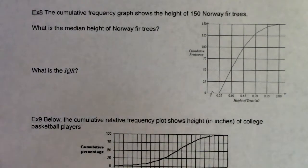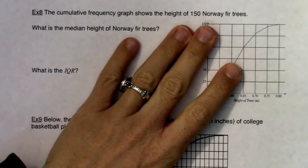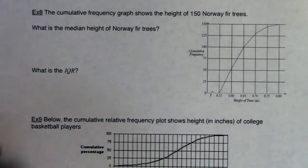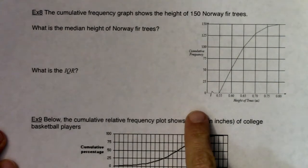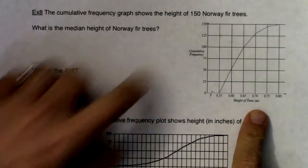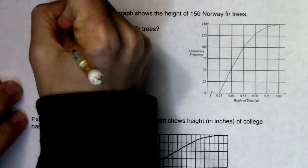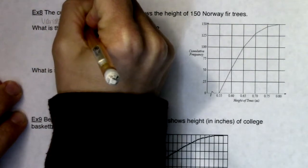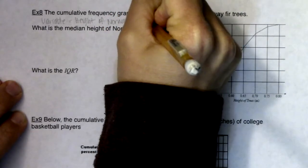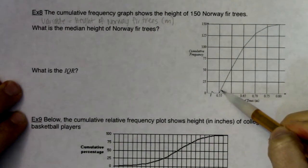The first thing I want us to discuss is: what is the variable in this problem? The cumulative frequency graph shows the height of 150 Norway fir trees. What is the median height and what is the IQR? When you're given a graph, identifying the variable is easier — you can see it right on the x-axis. Here it's the height of trees in meters.